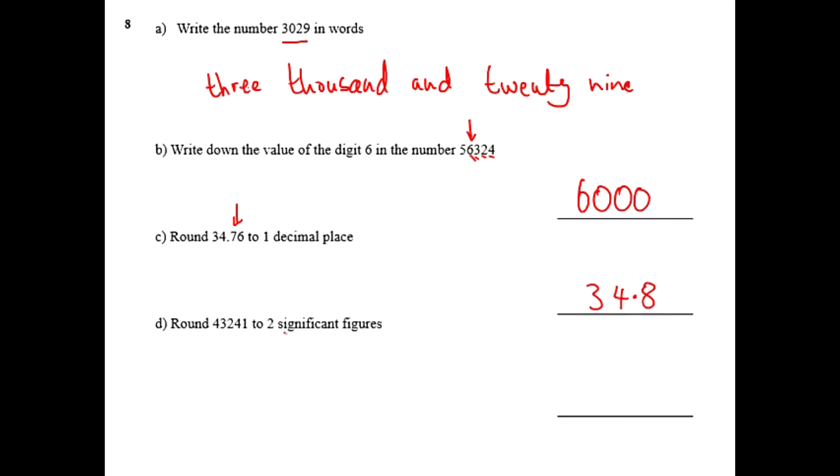And finally, round to two significant figures. Now, significant figures are a little different for rounding. There is a video on this if you want to go and check it. We check the first number, that's a 4, that's the first significant figure. The second number, that's a 3, that's the second significant figure. So we're going to write these down.